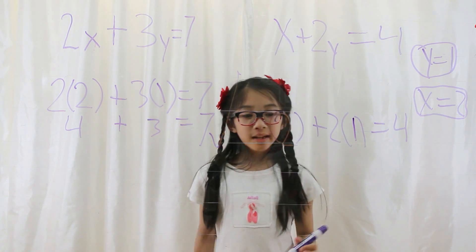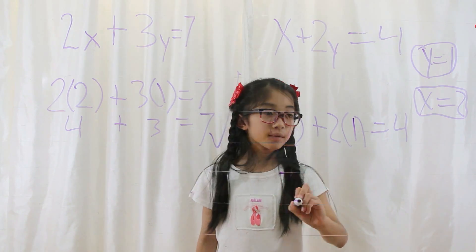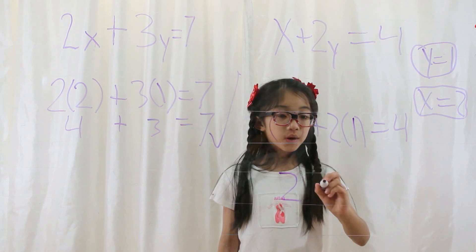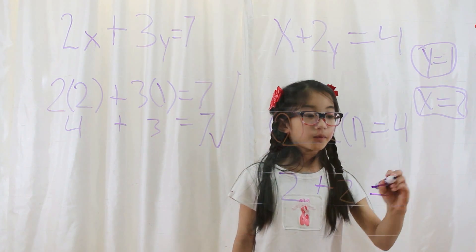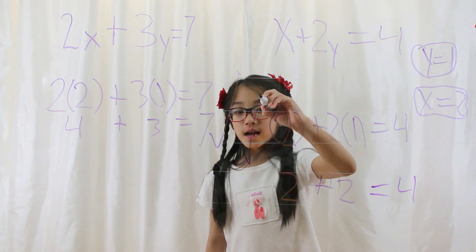Now multiply it out. You bring the 2 down, and 2 times 1 is 2. 2 plus 2 equals 4. Check!